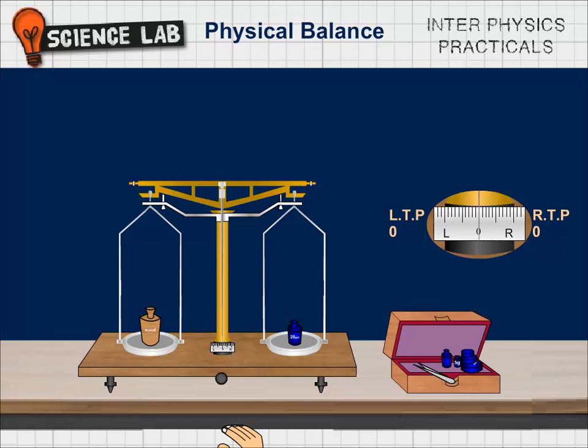If the resting point is less than ZRP, it is known as lower resting point LRP. Else, it is known as higher resting point HRP. At HRP, the mass in the right pan is less than the mass in the left pan and at LRP it is vice versa.